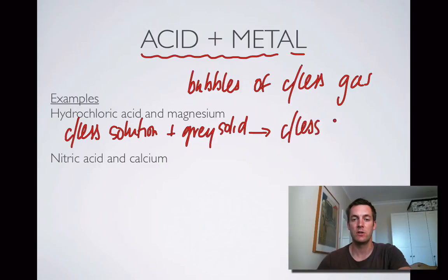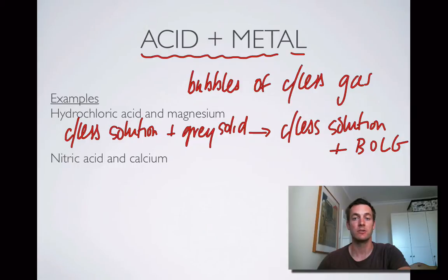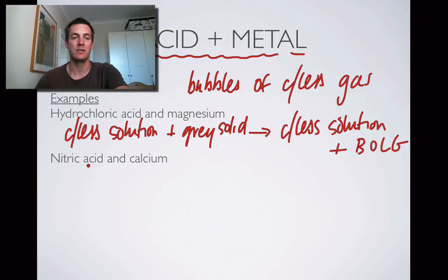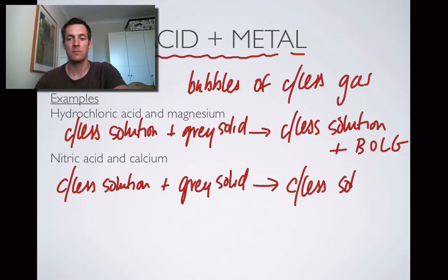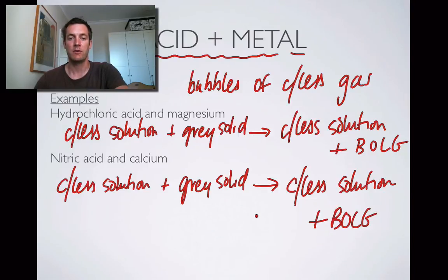We'll get a colourless solution and bubbles of colourless gas. Nitric acid and calcium: nitric acid, like all acids, is a colourless solution; calcium, like most metals, is a grey solid. What did we form? We formed calcium nitrate — we can look up the colours of those ions and we'll see a colourless solution, because calcium nitrate is also soluble so it's not going to be a solid; it's going to stay in solution — and bubbles of colourless gas.